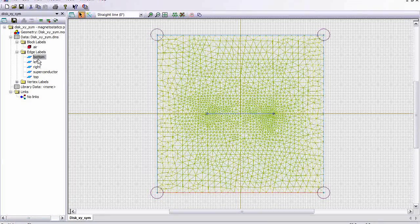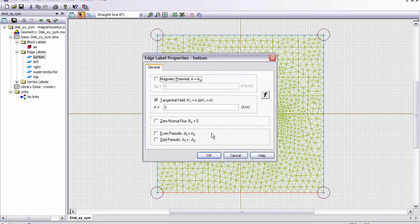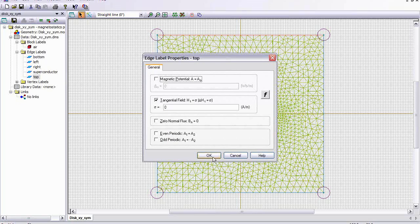The edge labels, the bottom edge here, is assigned zero tangential magnetic field. So the magnetic field lines will be coming in normal to this boundary here. As well as the top boundary also has zero tangential magnetic field.